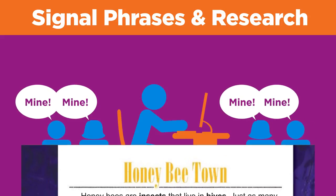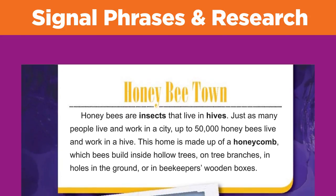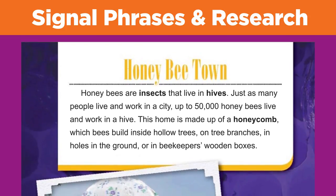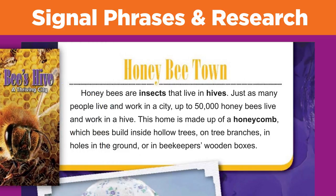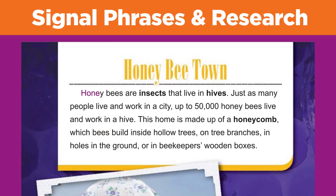Let's see how signal phrases are used to incorporate information from sources into a research paper. For our first example, we will use this paragraph from Joyce Markovic's book, The Honeybee's Hive. Don't worry, there won't be a quiz about it. Honeybees are insects that live in hives. Just as many people live and work in a city, up to 50,000 honeybees live and work in a hive. This home is made up of a honeycomb, which bees build inside hollow trees, on tree branches, in holes in the ground, or in beekeepers' wooden boxes.